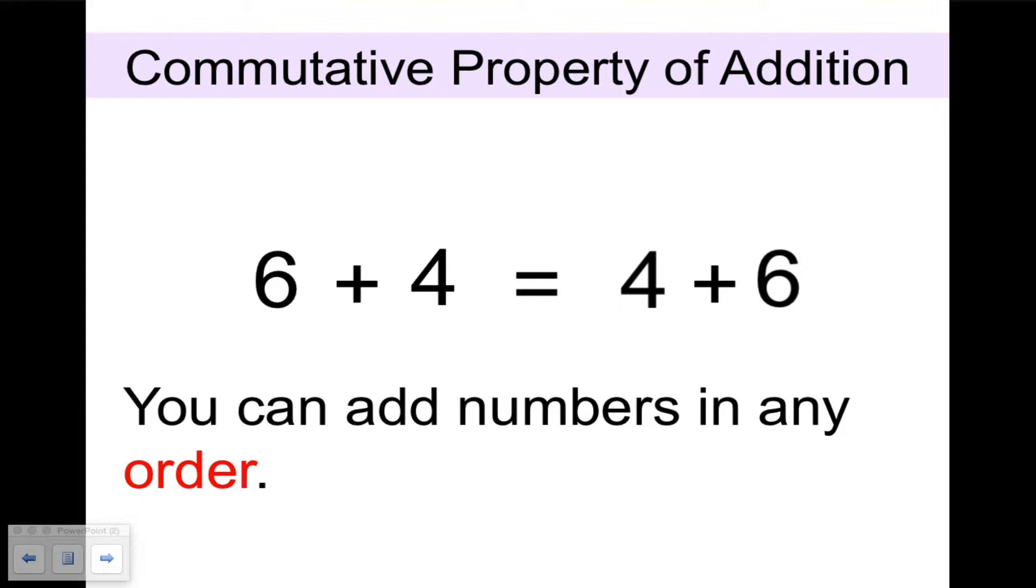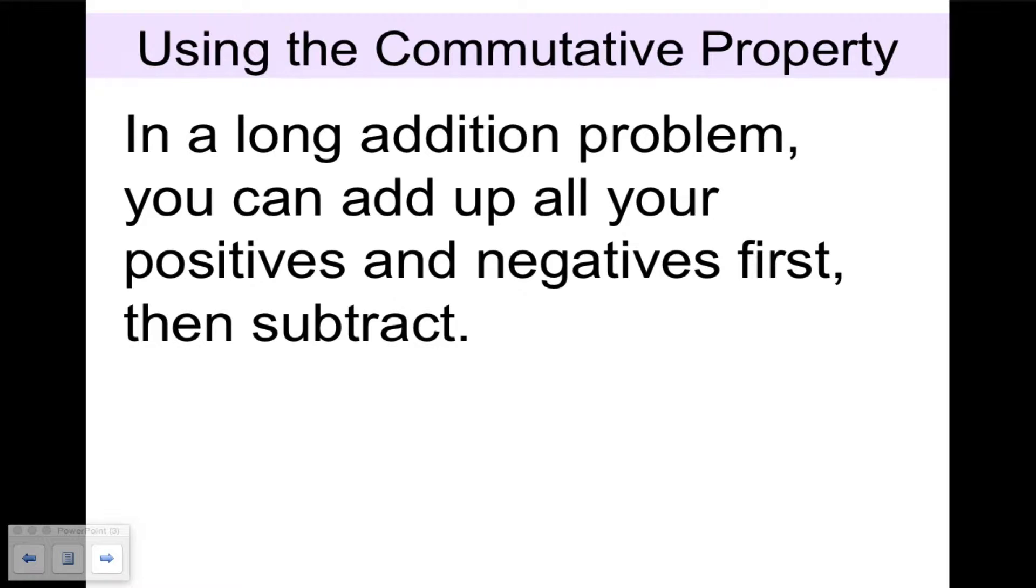Think of a question to which this is the answer for your Cornell style notes. This is how you use the commutative property of addition. In a long addition problem, you can add up all your positives and negatives first, then subtract.